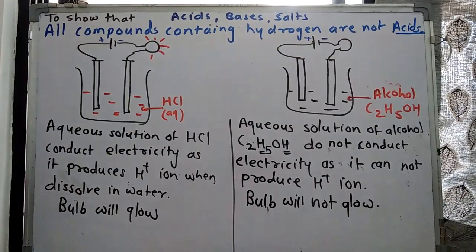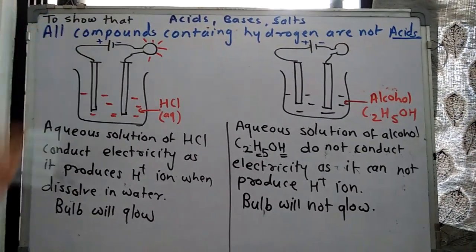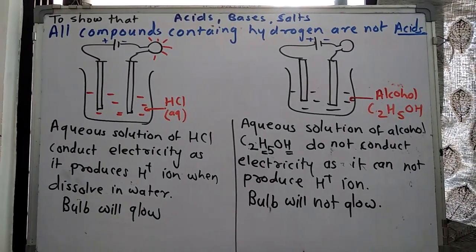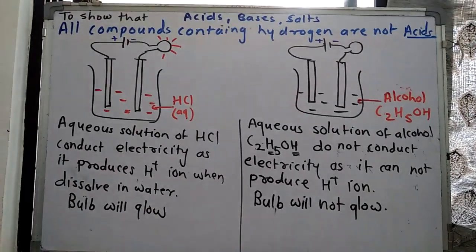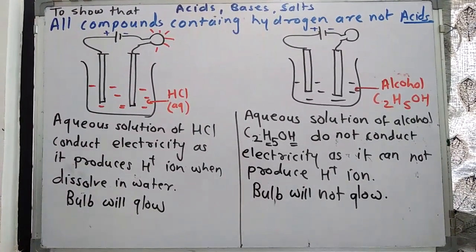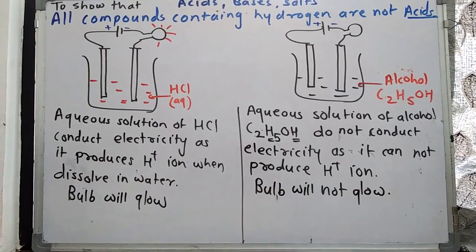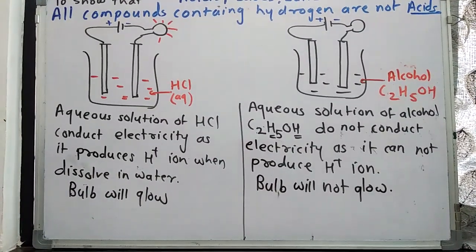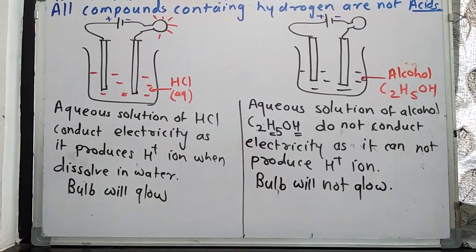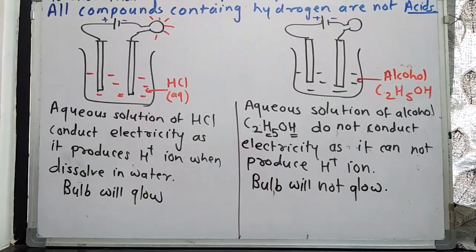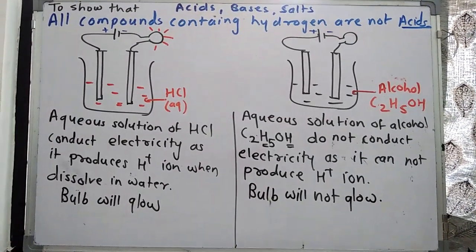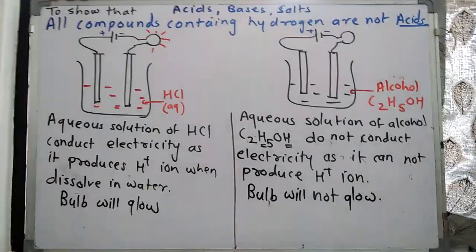Now we have an activity to show that all compounds containing hydrogen are not acids. Just because H is written in a formula does not mean it is an acid. An acid is specifically a substance that produces H+ ions when dissolved in water.